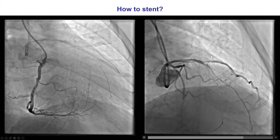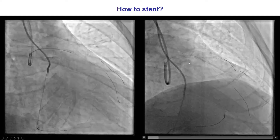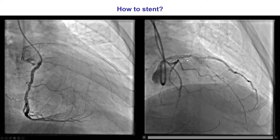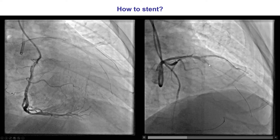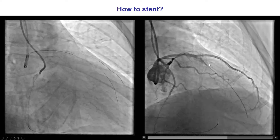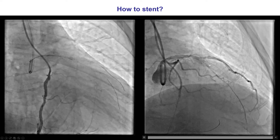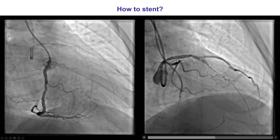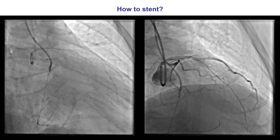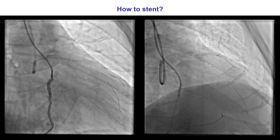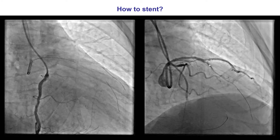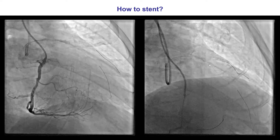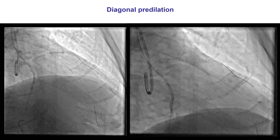The idea was to use two stents to ensure that the diagonal maintained patency and that the LAD had a nice result. The best technique for that — for both left main and non-left main bifurcations — is the DK crush technique.